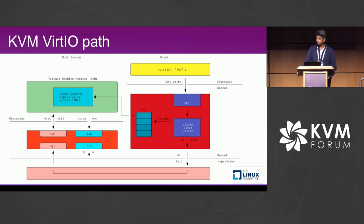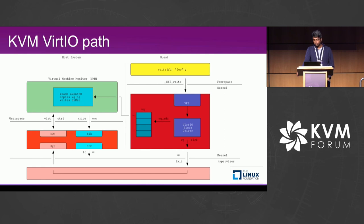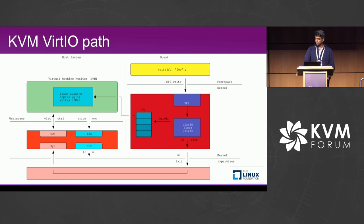In this particular case, the backend — the vhost user daemon — is implemented in user space. The host kernel passes control to the VMM running in user space, and the backend reads the eventFD to get the notification. It processes the virtqueue, reads the data packets, and if required, programs the hardware via a write command, having already mapped the device. Once done, it updates the status of the virtqueue and sends a callback to the guest VM. Notably, VirtIO is an asynchronous protocol, so the guest doesn't need to wait indefinitely for the host to complete the operation.